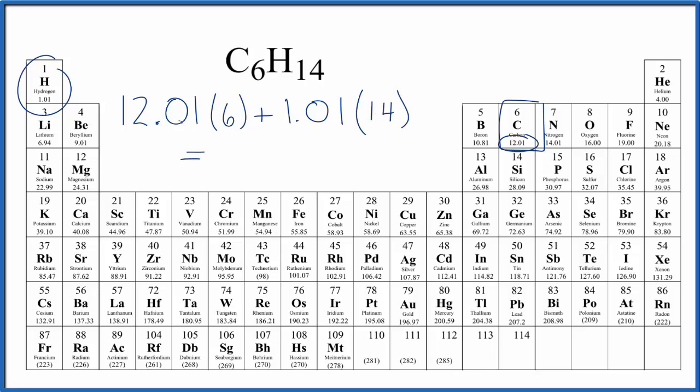So we multiply 12.01 times 6, and then 1.01 times 14. We add those numbers together. We end up with a molar mass for C6H14 of 86.20, and the units are grams per mole.